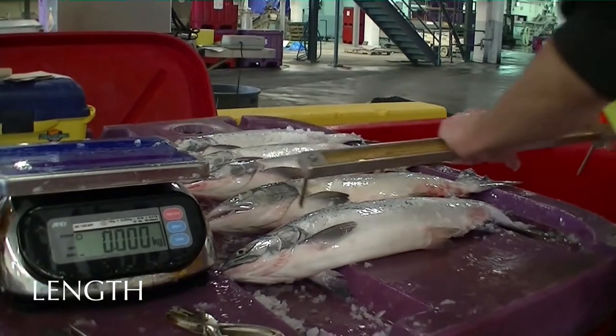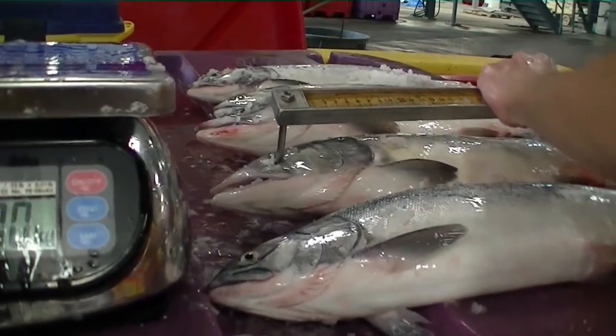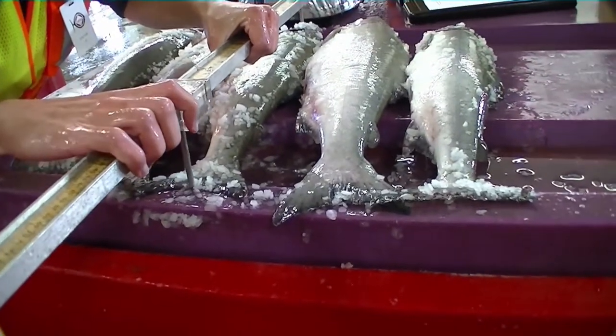Pacific Salmon Commission usually measures length from the rear of the eye socket to the fork in the caudal fin, which is known as the post-orbital fork length. Lengths should be recorded to the nearest millimeter based on the distance between the two stakes of the measuring stick.